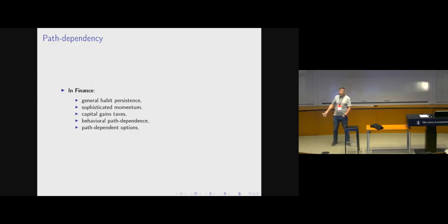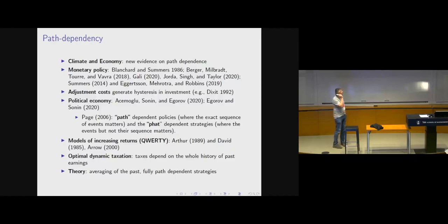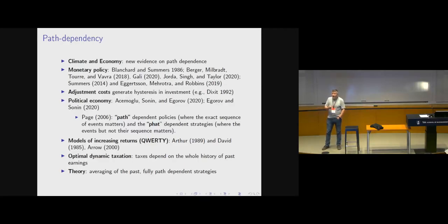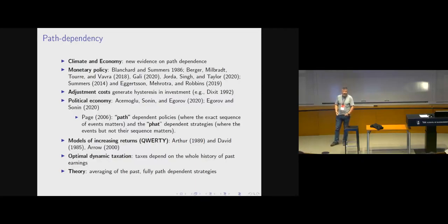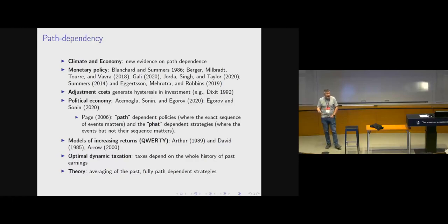Path-dependent options are one of the important initial questions in asset pricing. More broadly, there's evidence of how Arctic regions are being thawed — the exact path may matter for how much CO2 is released. Monetary policy hysteresis: long periods of unemployment may fundamentally change the inflation-unemployment trade-off. Adjustment costs: investment models with adjustment costs generically give rise to non-trivial path dependence histories. There's also interesting work in political economy where hysteresis arises.